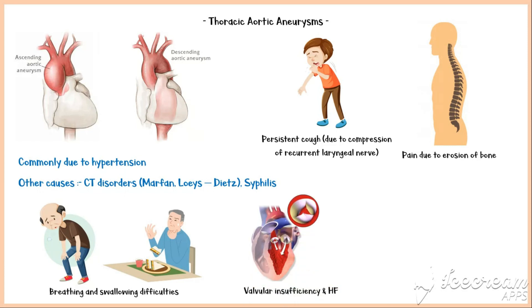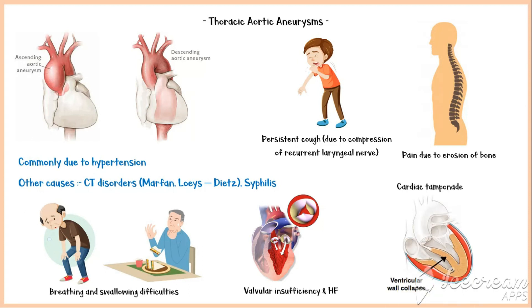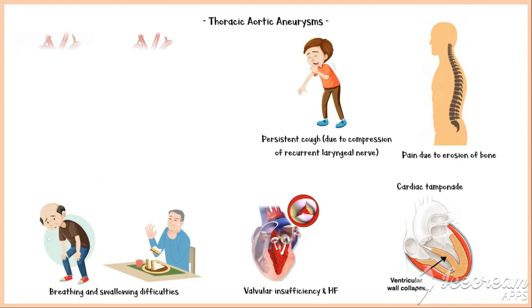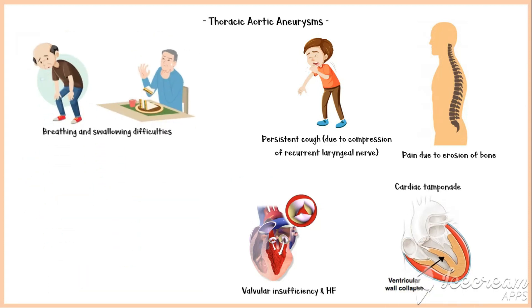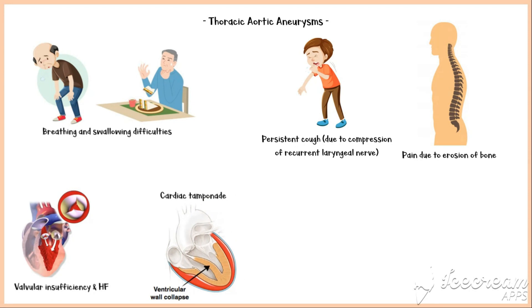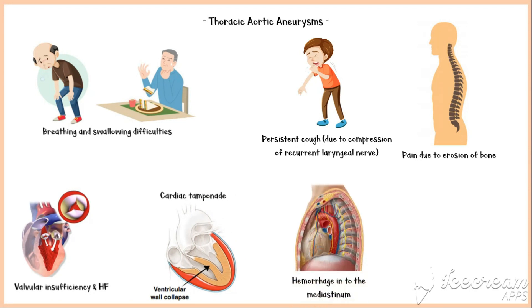In conditions where the aneurysm is formed in the root of the aorta, rupturing of these aneurysms can cause bleeding into the pericardium, resulting in cardiac tamponade. In severe cases, rupture of an aneurysm can cause massive bleeding into the mediastinum, leading to extremely fatal consequences.